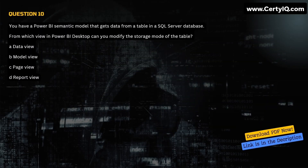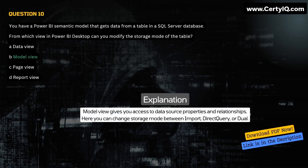Question 10. You have a Power BI semantic model that gets data from a table in a SQL Server database. From which view in Power BI Desktop can you modify the storage mode of the table? A. Data view. B. Model view. C. Page view. D. Report view. Correct answer is B. Explanation: Model view gives you access to data source properties and relationships. Here you can change storage mode between Import, Direct Query, or Dual.